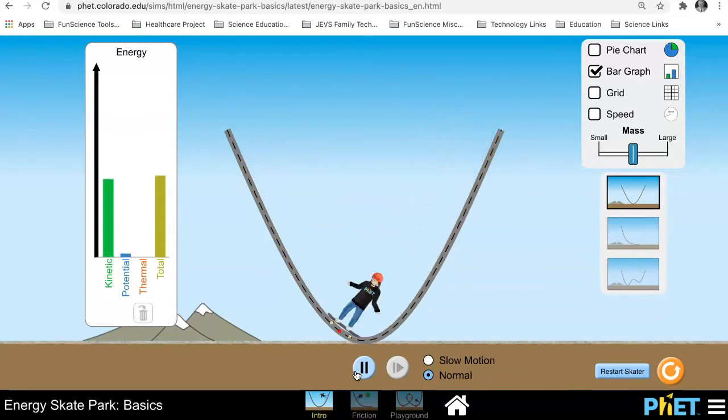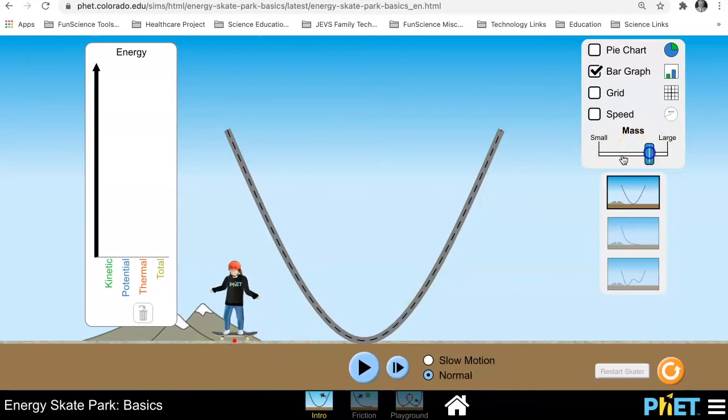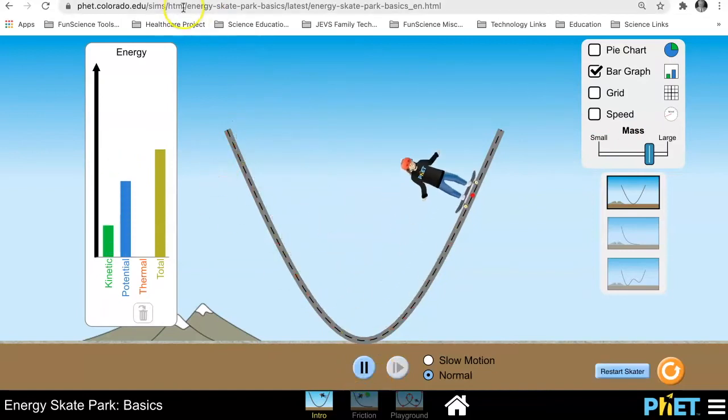You'll notice that she'll go on like this forever because there's no thermal, there's no friction in this particular part of the simulation. Now, we can do a couple things here. When we explore, we could take her off there and we could say, let's make the mass a little bit larger. And we can see what happens there. Push play.